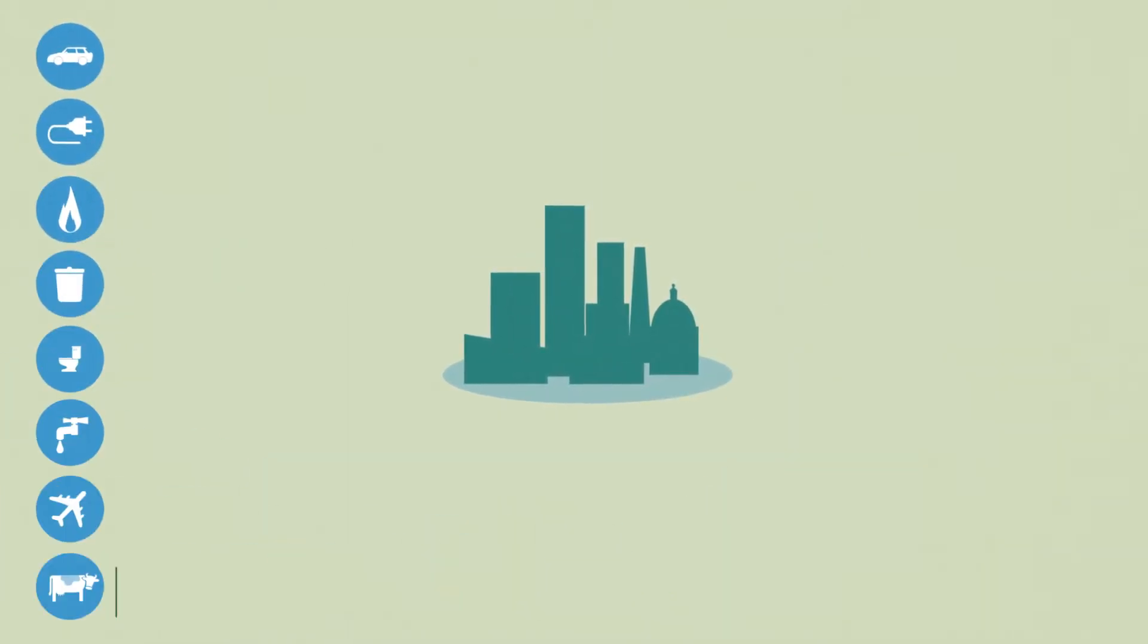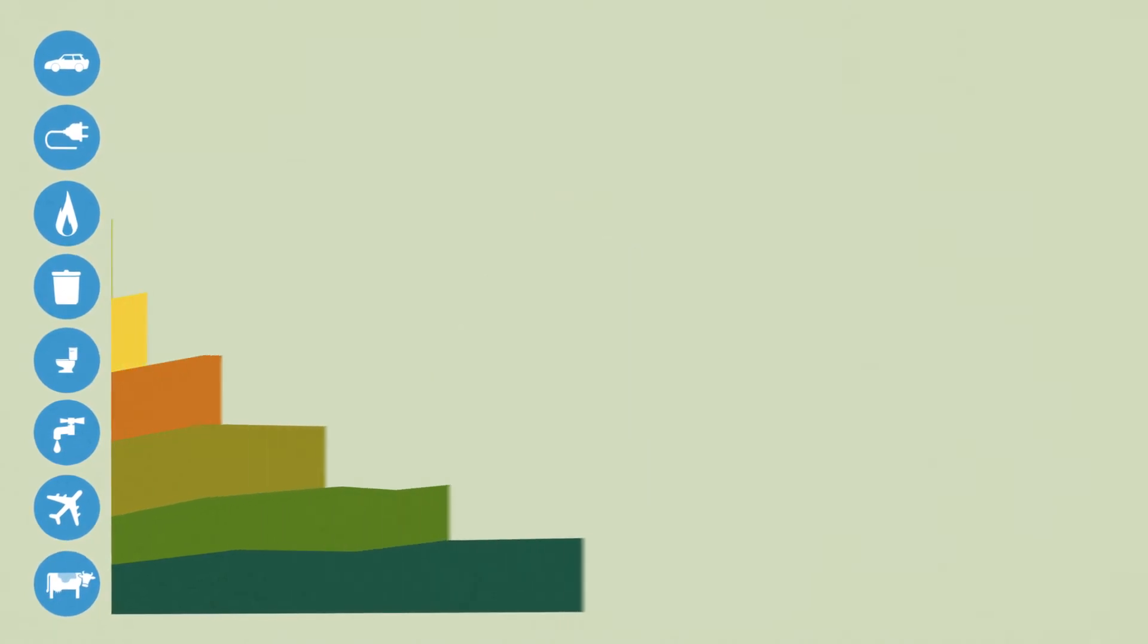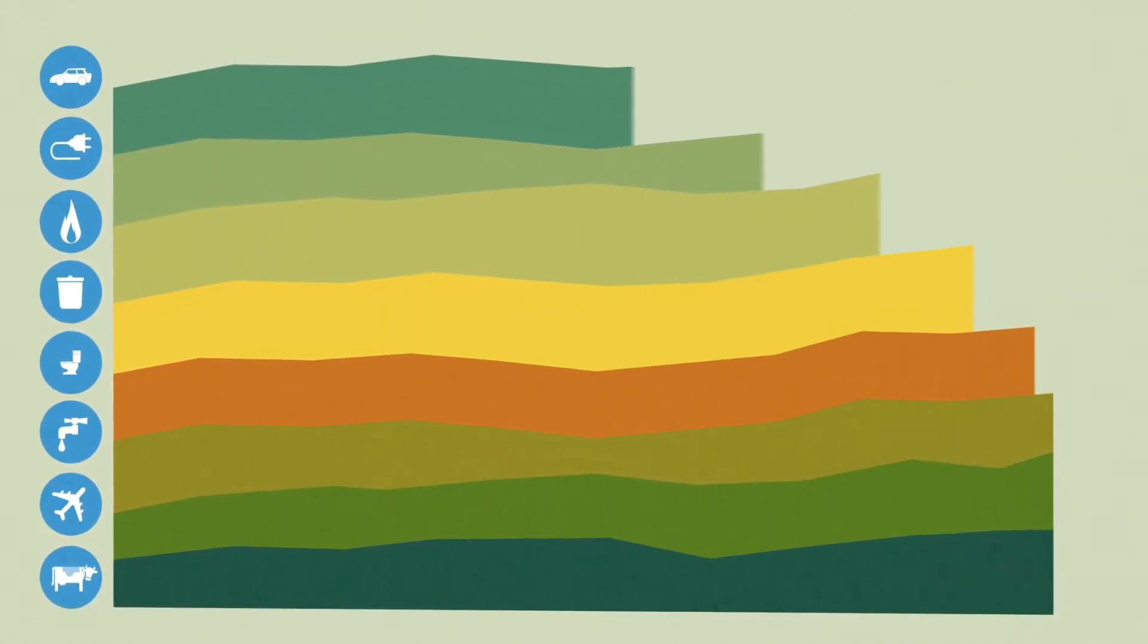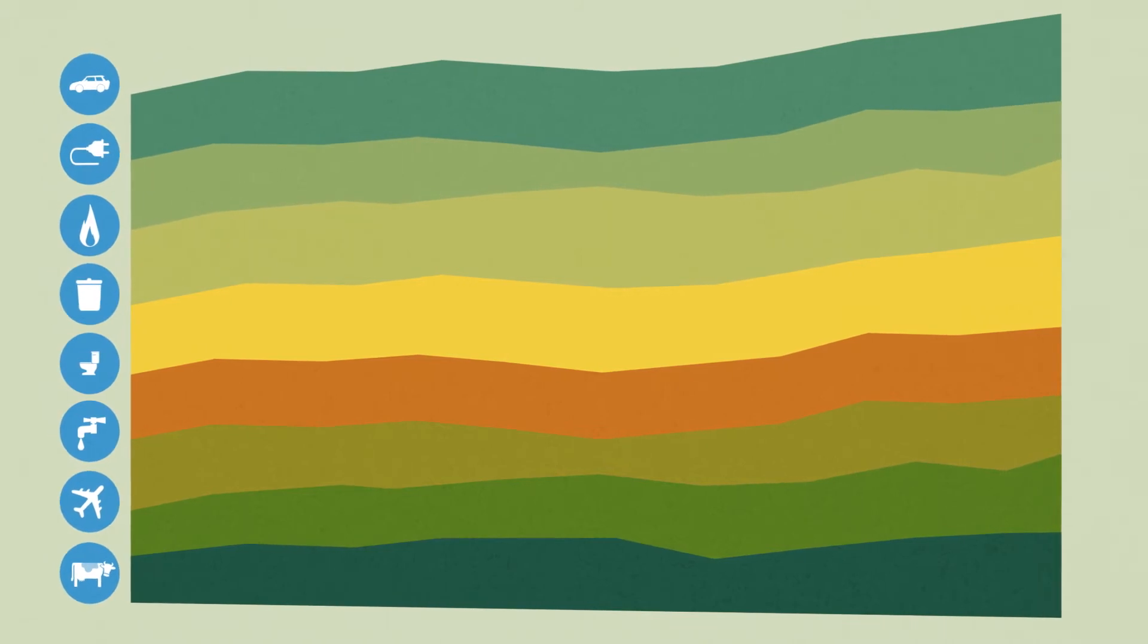Next, cities use ClearPath's Forecast Module to examine how their community's emissions will change over time and to better understand what the future will hold if no action is taken.